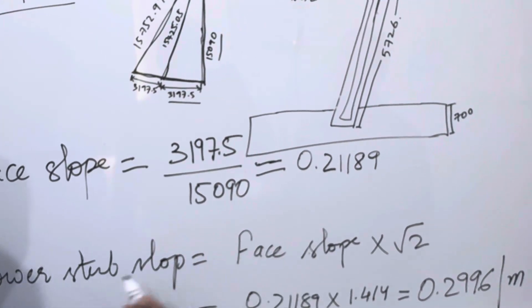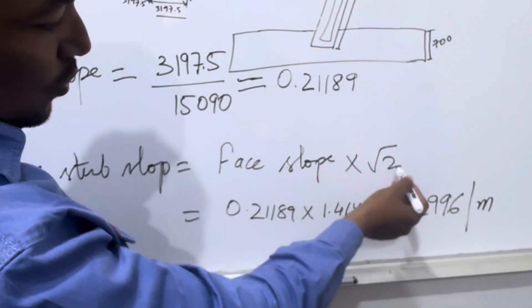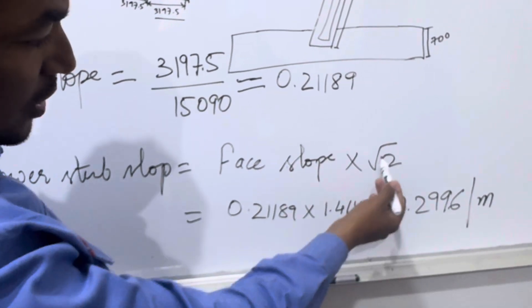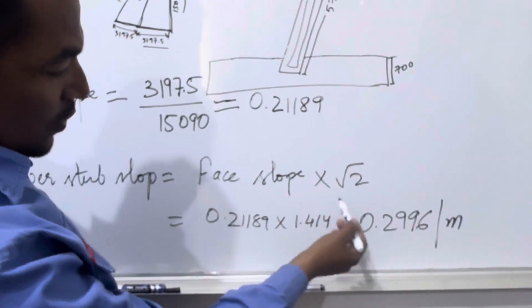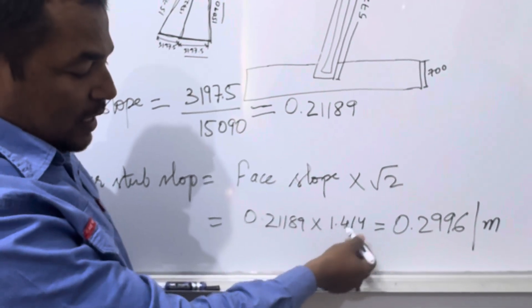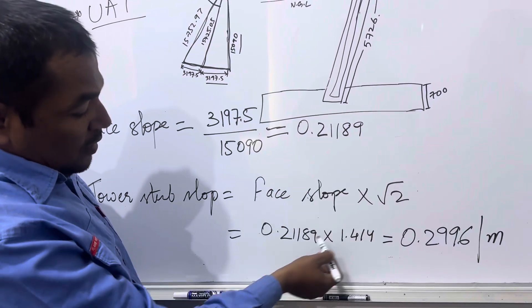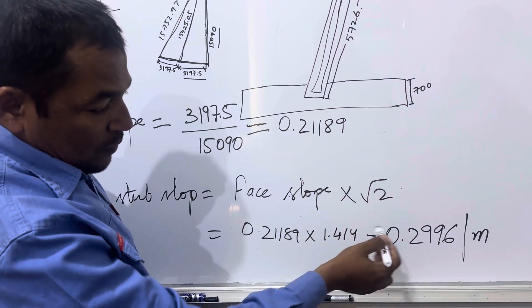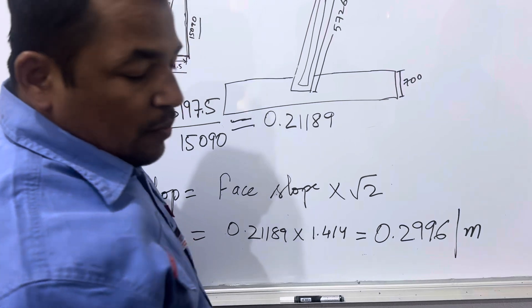Then from this we will do the tower of phase slope into root 2, so the root 2 value is 1.414. So you know it will give you immediate result, that's why we are taking direct value of the root 2. So this 0.2118 into 1.414 you have 0.296, this is the slope per meter.